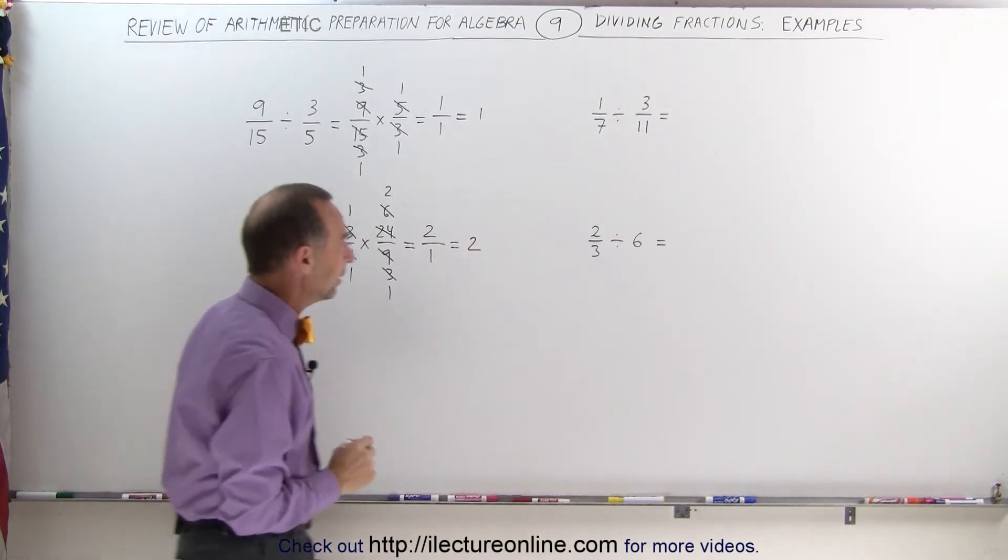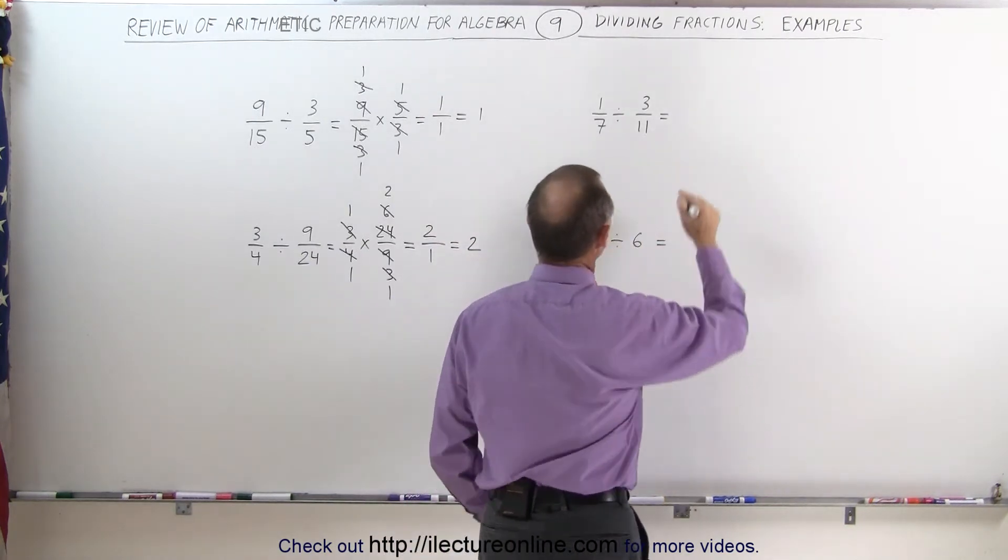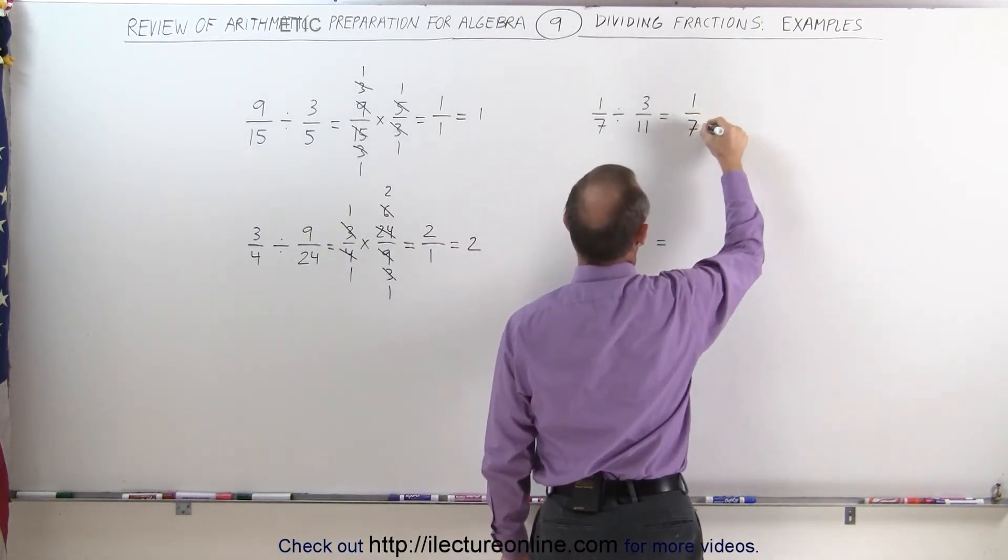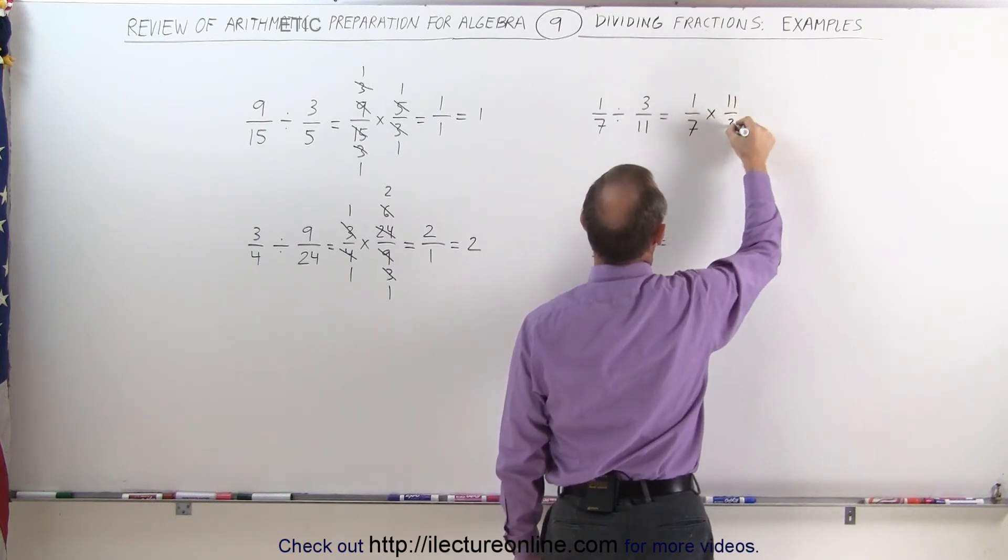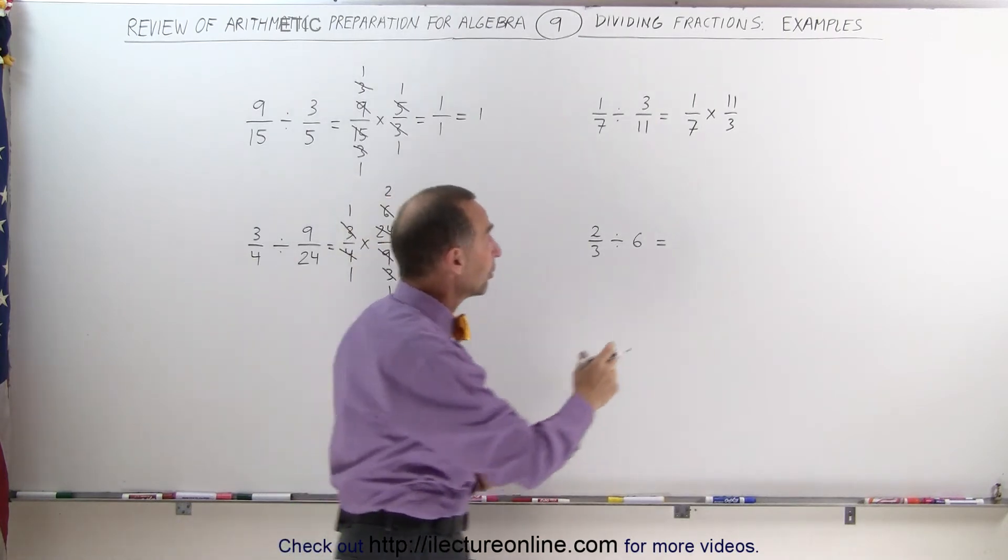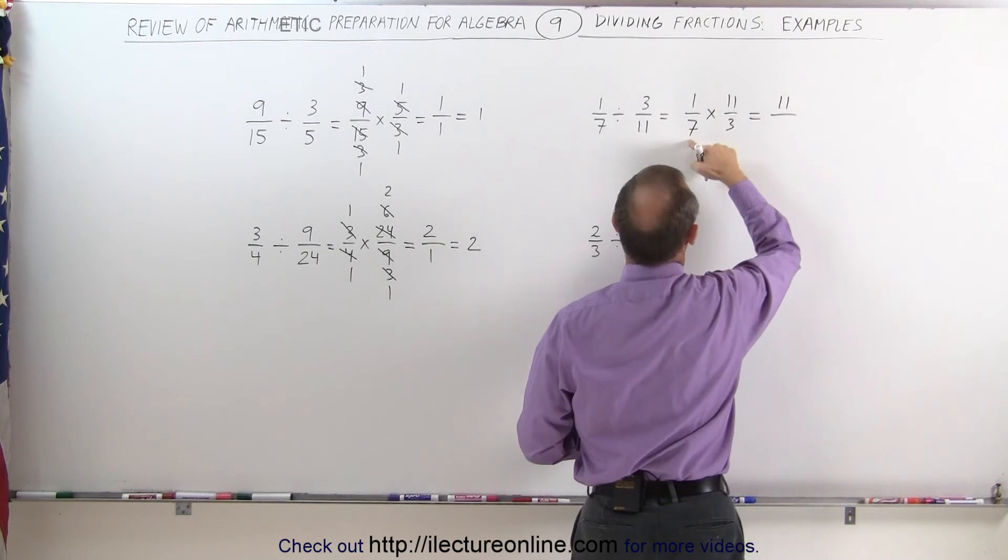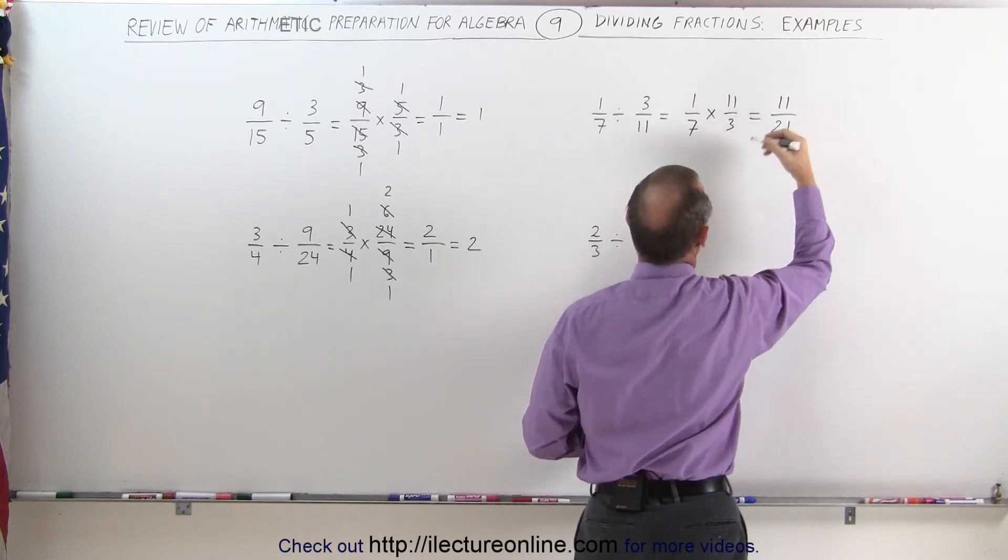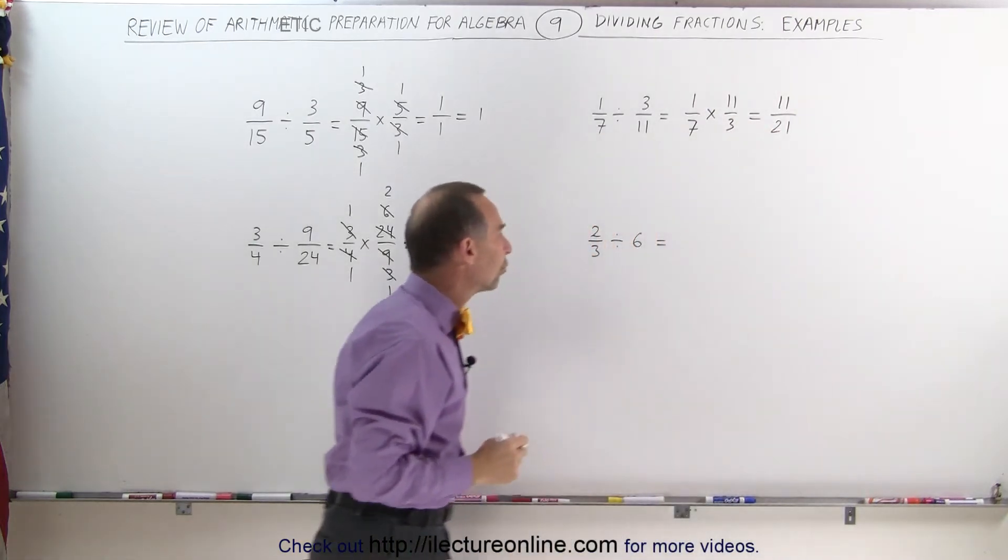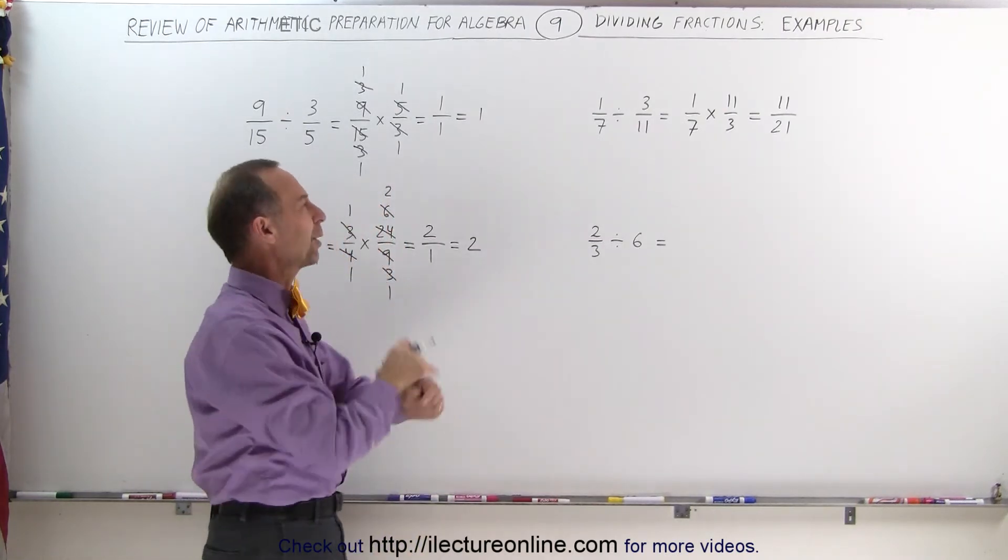Let's try that one over there, so 1/7 divided by 3/11, that's the same as writing 1 over 7 times 11 over 3. Here we cannot simplify anything, we simply continue by multiplying the numerators together, 1 times 11 divided by 7 times 3, which is 21, and the answer is 11/21.